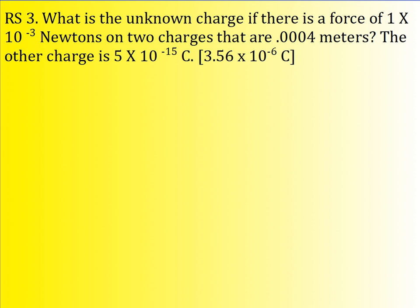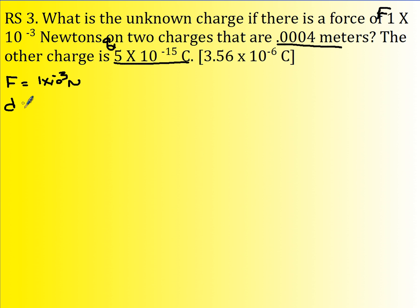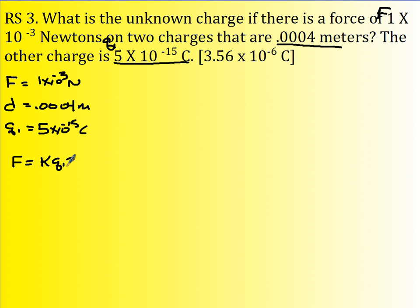What is the unknown charge if there is a force of 1 times 10 to the negative 3rd Newtons on two charges that are 0.0004 meters apart, and the other charge q1 is 5 times 10 to the negative 15? So f is 1 times 10 to the negative 3rd Newtons, d is 0.0004 meters, and q1 is 5 times 10 to the negative 15 Coulombs. You know f equals k q1 q2 divided by d squared.